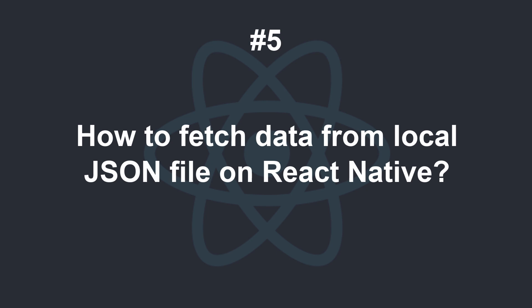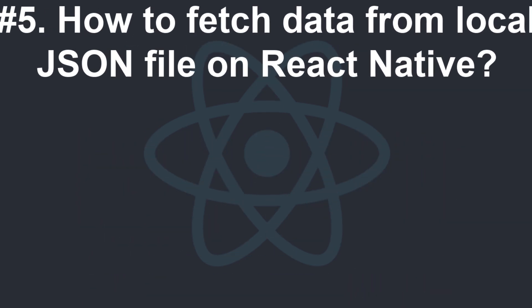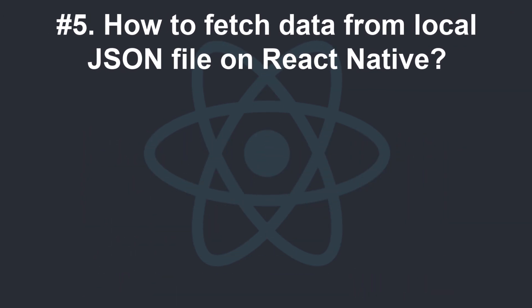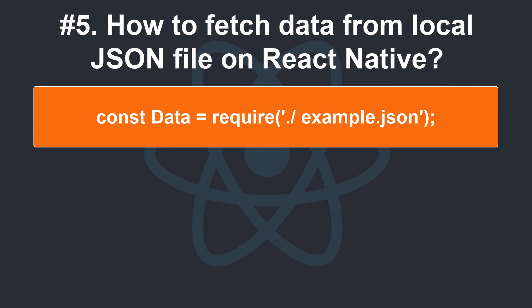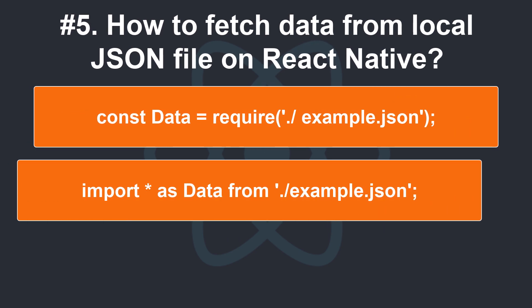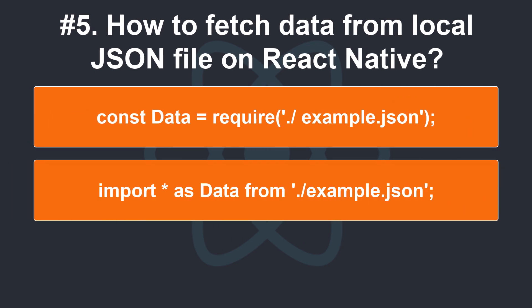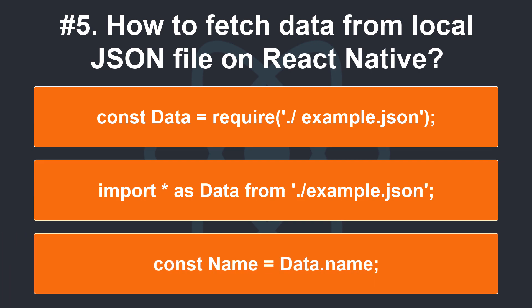How do you fetch data from a local JSON file in React Native? You can use require, or you can import directly in ES6, and then access data like a normal JavaScript object.